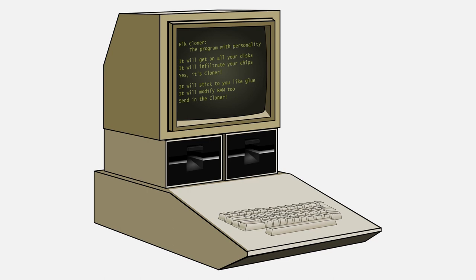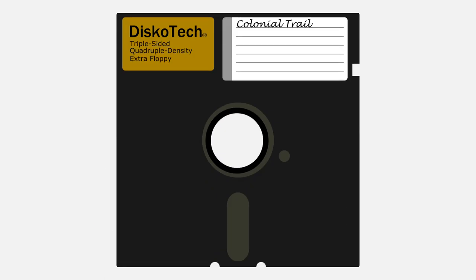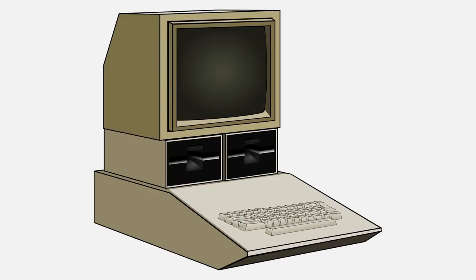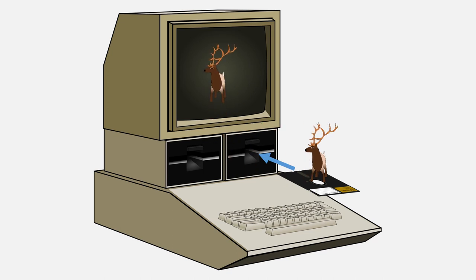Here's how Elk Cloner spread. Back then, computers stored practically everything on floppy disks. Every time a floppy disk was inserted into the computer, the computer would run code stored on the disk to load or boot the disk onto the computer. Elk Cloner would start out attached to the boot code of a floppy disk. When an infected disk was inserted into an Apple II computer, Elk Cloner would copy itself onto that computer.